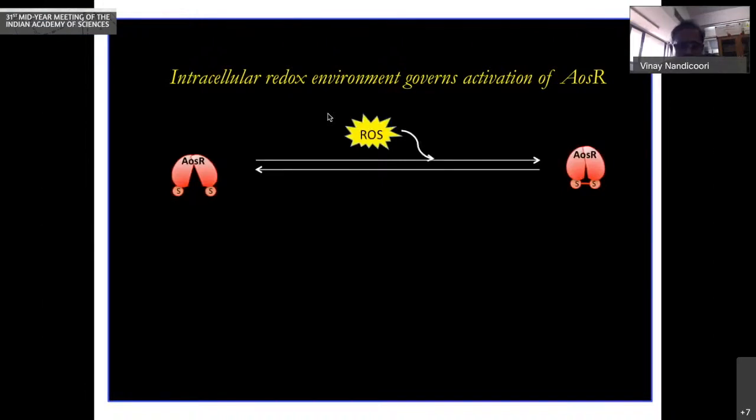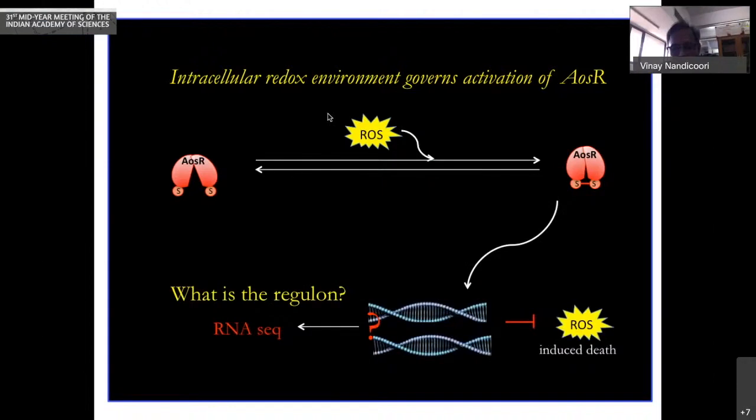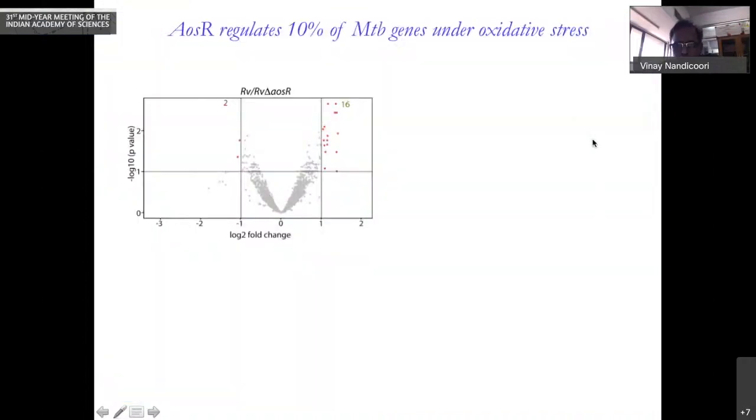What one does is transcriptome analysis. We have done RNA-seq to find out what are the downstream targets of AOSR. We did it on wild type and mutant in regular condition and in oxidative condition. To cut the story short, in normal condition, we did not find any major differences between wild type and mutant.